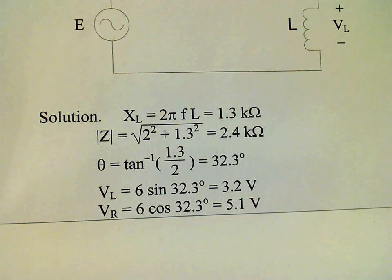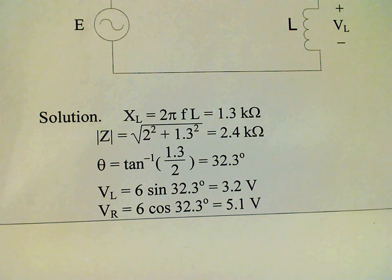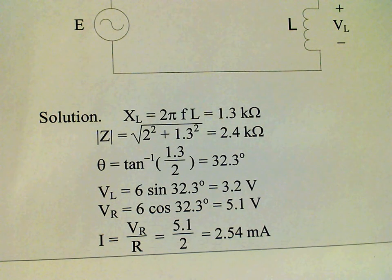Finally, the current is the voltage across the resistor divided by the resistance, which is 2.54 milliamps.